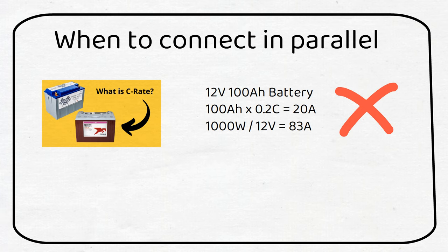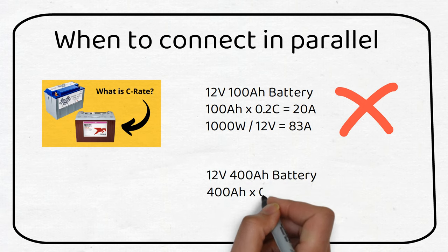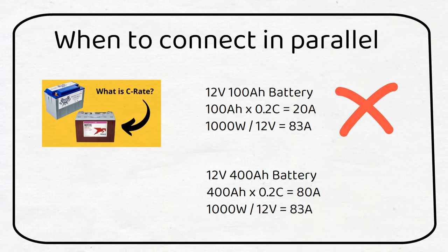It's much better to have 4 batteries in parallel if you've already bought your 12 volt inverter. Otherwise the voltage of the battery should be increased. Let's use 4 batteries in parallel and do the same calculation. 400 amp hours times 0.2C is 80 amps. We can see that 80 amps is about what the inverter will draw. This is a better configuration.